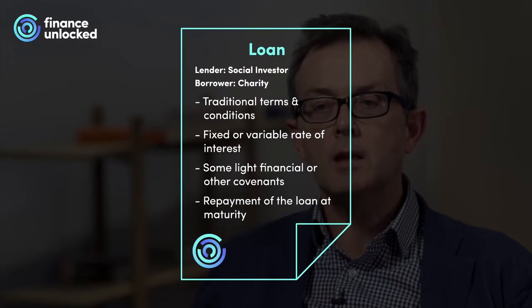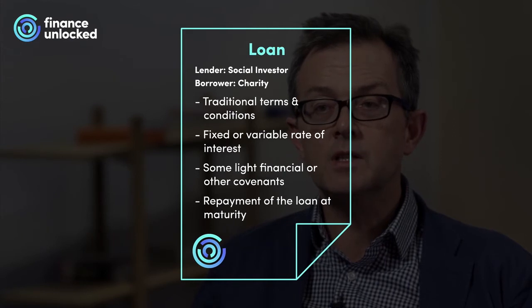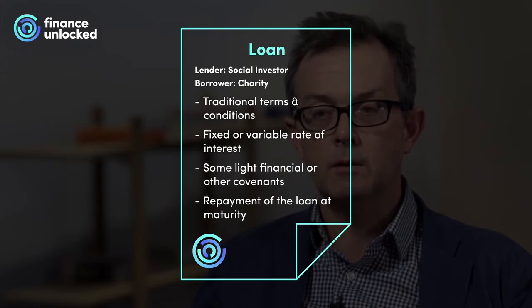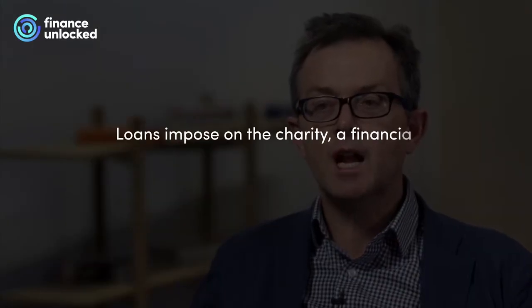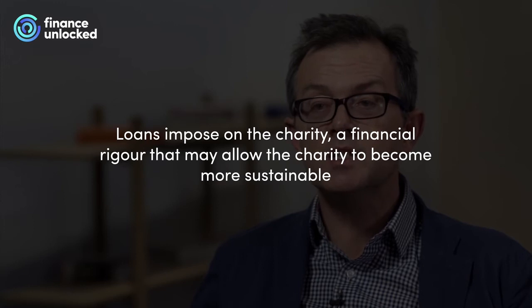These social investors make loans with traditional terms and conditions — usually a fixed or variable rate of interest, some light financial and other covenants, and of course the requirement to repay at the end of the loan. This is more onerous than grant funding, which is sometimes viewed as the equivalent of equity finance for a charity. But it also has advantages. It imposes on the charity a financial rigour that may allow the charity to become more sustainable. The charity can use this discipline to identify service-related cash flows that have some reliability, allowing them to budget for debt service and principal repayment. In fact, grants often have debt-like characteristics for the charity.